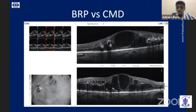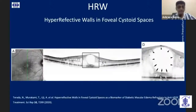Adding to more confusion, Terada et al published a new entity called hyperreflective walls this year. In this paper, they concluded that visual acuity did not differ in eyes with or without such an OCT finding. Hence, this proves that these new acronyms only add to our confusion.